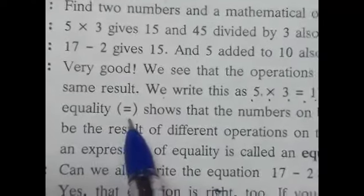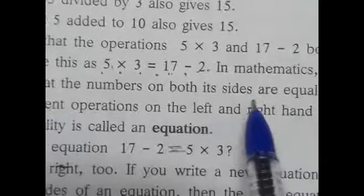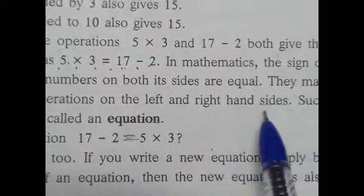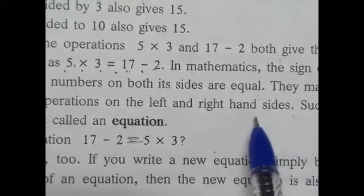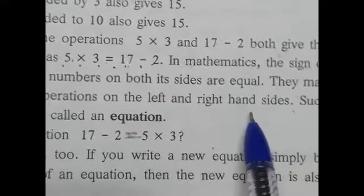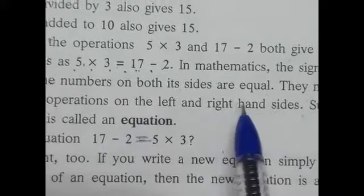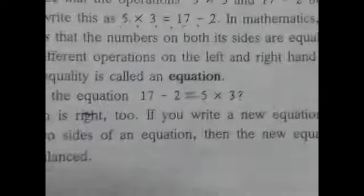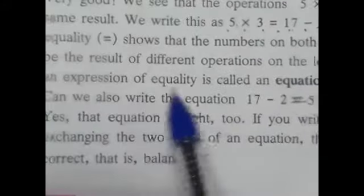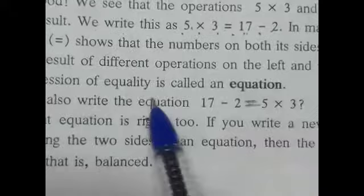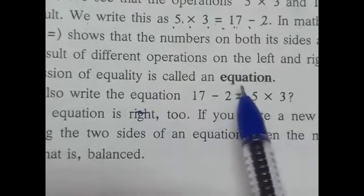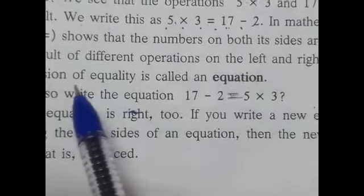In mathematics, the sign of equality shows that the numbers on both sides and equations, they may be the result of different operations on the left and right hand side. This is the sign of equality. This is the mathematical operation. This is the sign of equality, and the expression of equality is called an equation. Such an expression of equality is called an equation.